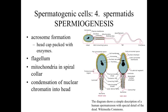In spermiogenesis, a relatively generic round cell is streamlined for delivering DNA to the egg to allow fertilization. This involves condensation of the DNA, which is packed within the head region; mitochondria arranged in a spiral collar to provide ATP energy to power the developing flagella tail; and acrosome formation — a cap-like region packed with enzymes that allow the sperm to digest its way through and penetrate the outer covering around the ovum, enabling delivery of DNA to the egg cell.